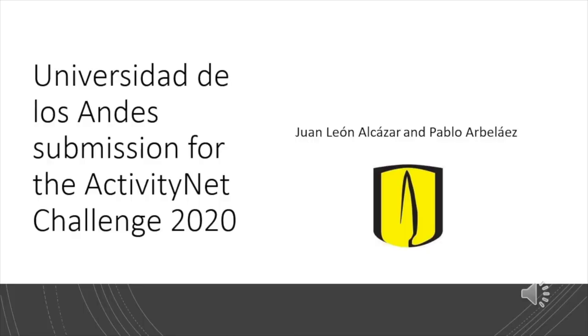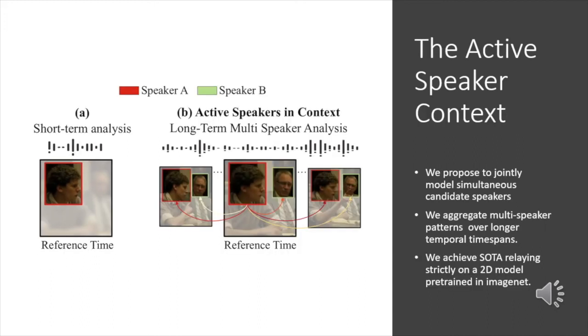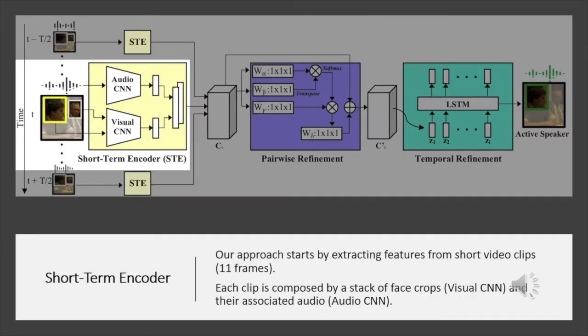Welcome. This is the submission by the Universidad de los Andes to the ActivityNet Challenge 2020, in the task of Active Speaker Detection. In the Active Speaker Detection, several methods have been tried. Among them, 3D convolution, multi-task learning, and large-scale pre-training. Now, all these methods share something in common, which is that they focus on trying to create a better prediction for a single speaker. We propose a different approach, and that is, we will try to improve the prediction over a single speaker, not by finding better features or better estimates for this speaker, but by relating this speaker information to the information from other speakers. That is what we refer to as the active speaker context.